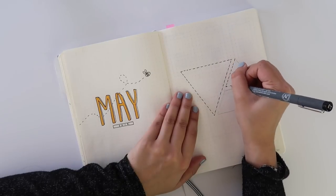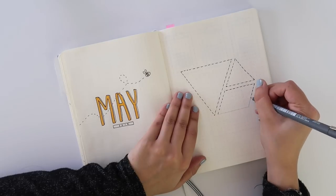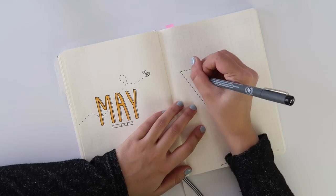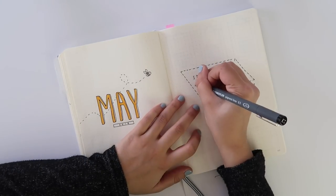I added that little bee and on the next page is where I did my month at a glance. Looking back on it, I wish I would have made the month at a glance portion a little bit smaller in this triangle because I think it looks a little too big for the triangle.